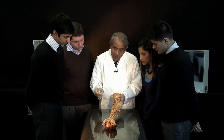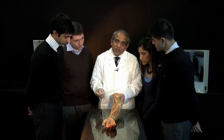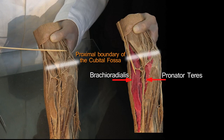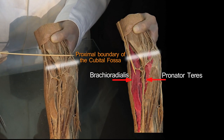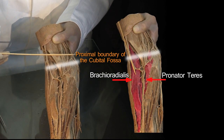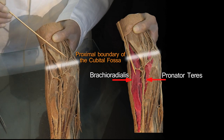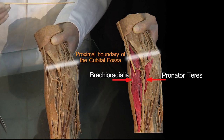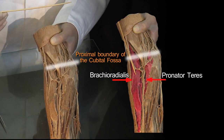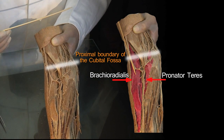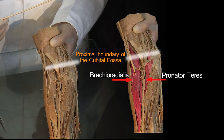The proximal boundary of this triangular space is an imaginary line between the medial and lateral epicondyles. That is the outline of the cubital fossa.